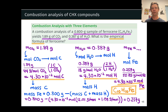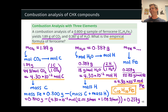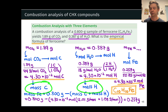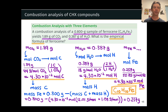This procedure generalizes to any CHX compound, where X is any third element — oxygen is very common, but also sulfur, phosphorus, nitrogen, or anything else. This kind of combustion analysis relies on the law of conservation of mass. It includes the extra step of finding the masses of carbon and hydrogen, then subtracting those from the total mass of the material to determine the mass of the third element, and from there calculating the moles and empirical formula.